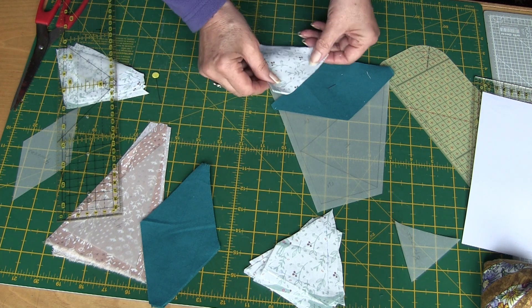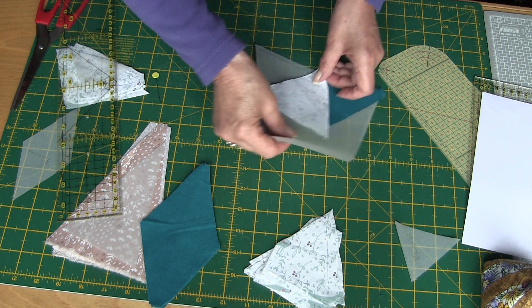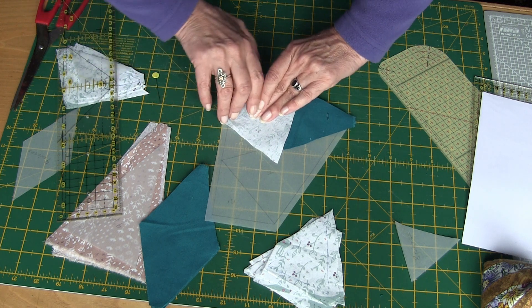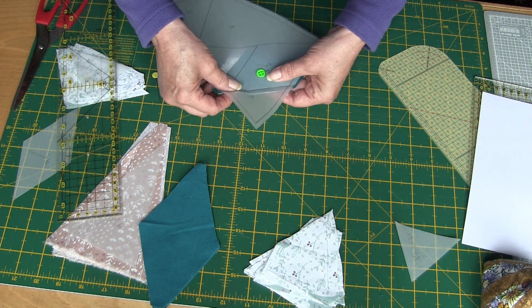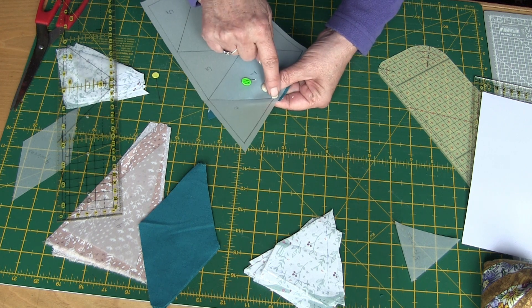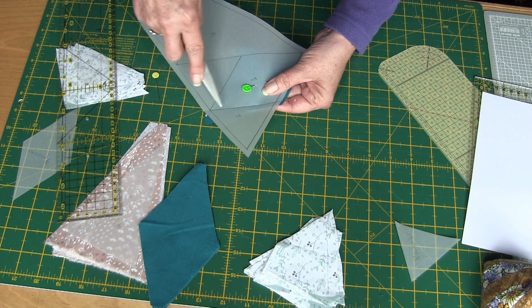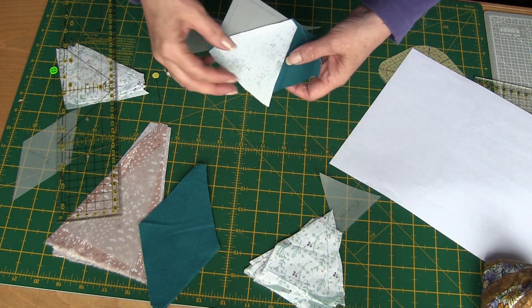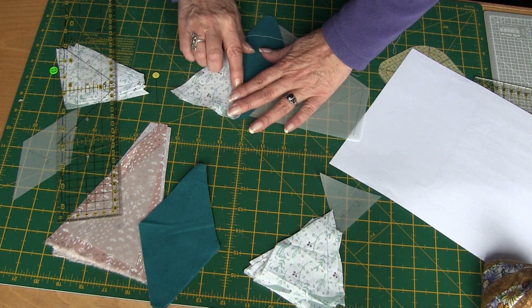Sobre todo porque hemos cortado ya las piezas de tela y no nos podemos pasar en los márgenes. Si esto queremos que nos quede así, tenemos que coserlo así. Le damos la vuelta. Si vemos que se nos va a mover le ponemos un alfiler, y si no directamente nos vamos a la máquina y cosemos. Ya está cosido, lo giramos y lo aprestamos un poquito.